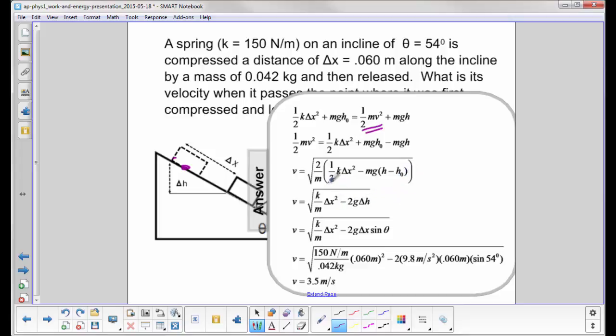After multiplying through by 2 and k, we now recognize that delta H, the height right here—this angle is theta by alternate interior angles.